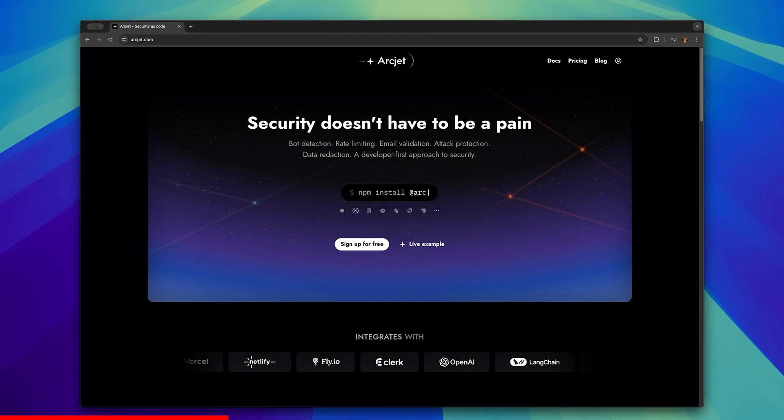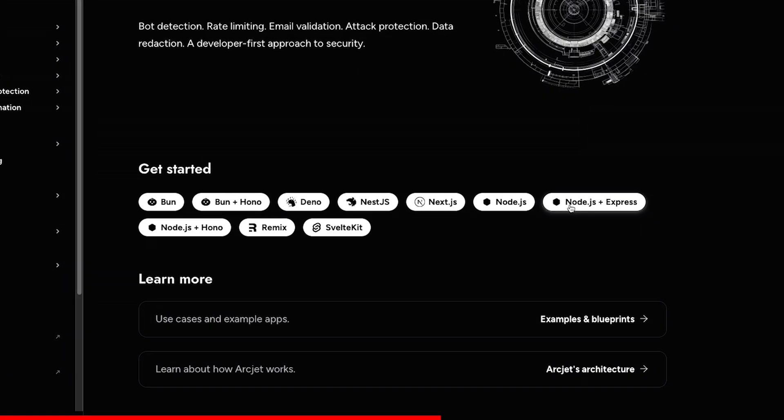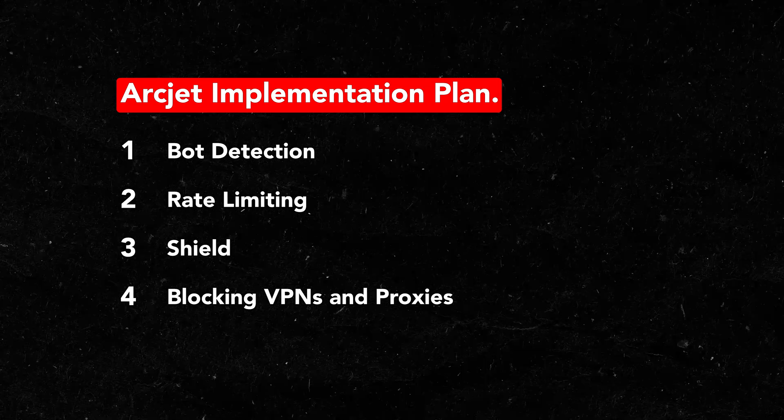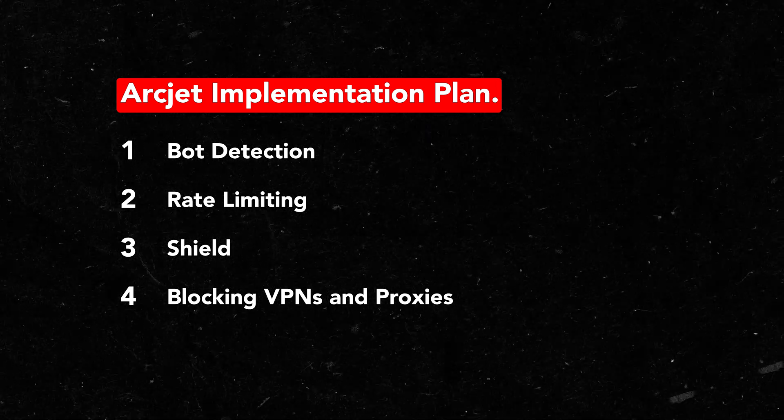We're almost done with the development of this API. There's just one more thing to do — we need to talk about how we can protect our application from being attacked. Because we're dealing with potentially sensitive financial information, we need to make sure our application and our users are protected. That's why I'm grateful that ArcJet is sponsoring today's video. ArcJet makes it extremely easy to add multiple layers of security to your JavaScript-based projects. We're going to be implementing multiple security rules including bot detection, rate limiting, and shield, as well as preventing VPNs and proxies from impersonating users, because the biggest threat to an application like this is automated attacks.